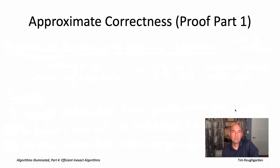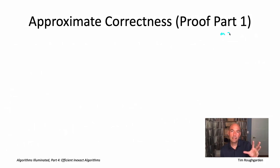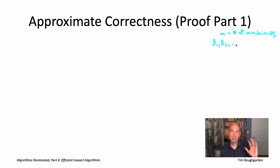Let's jump into the formal proof. First, just to remind you of the notation: little m denotes the number of machines, and then we have job lengths L1 up to Ln, where n is the number of jobs.